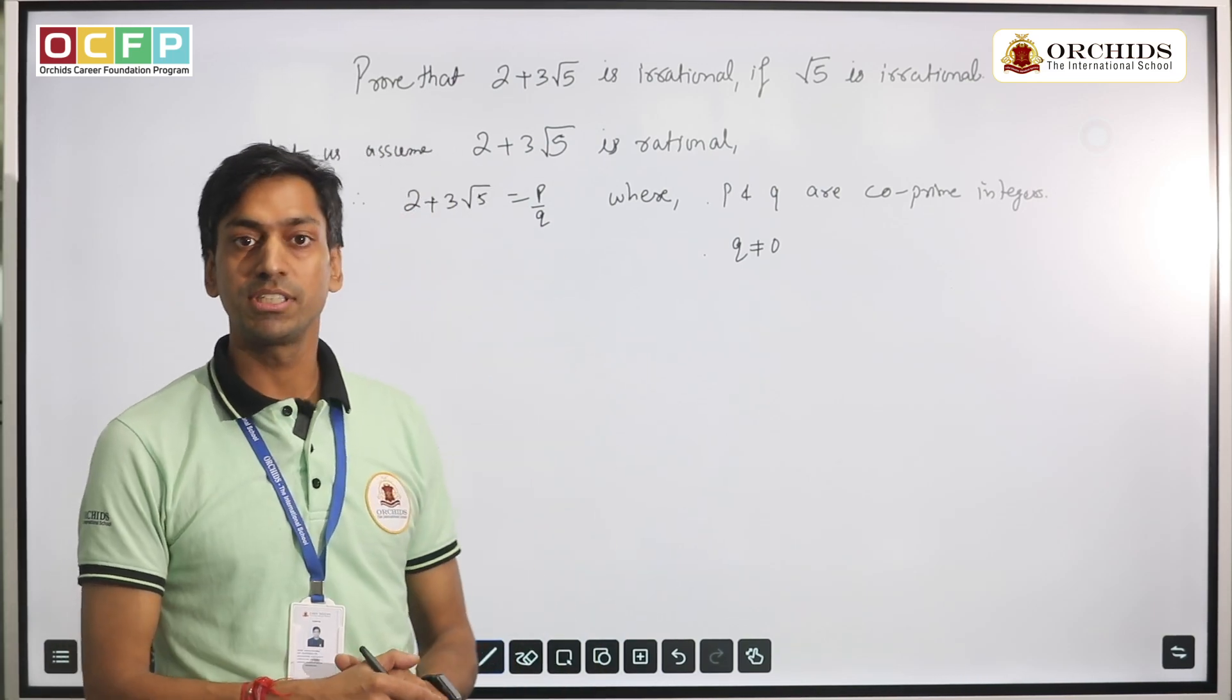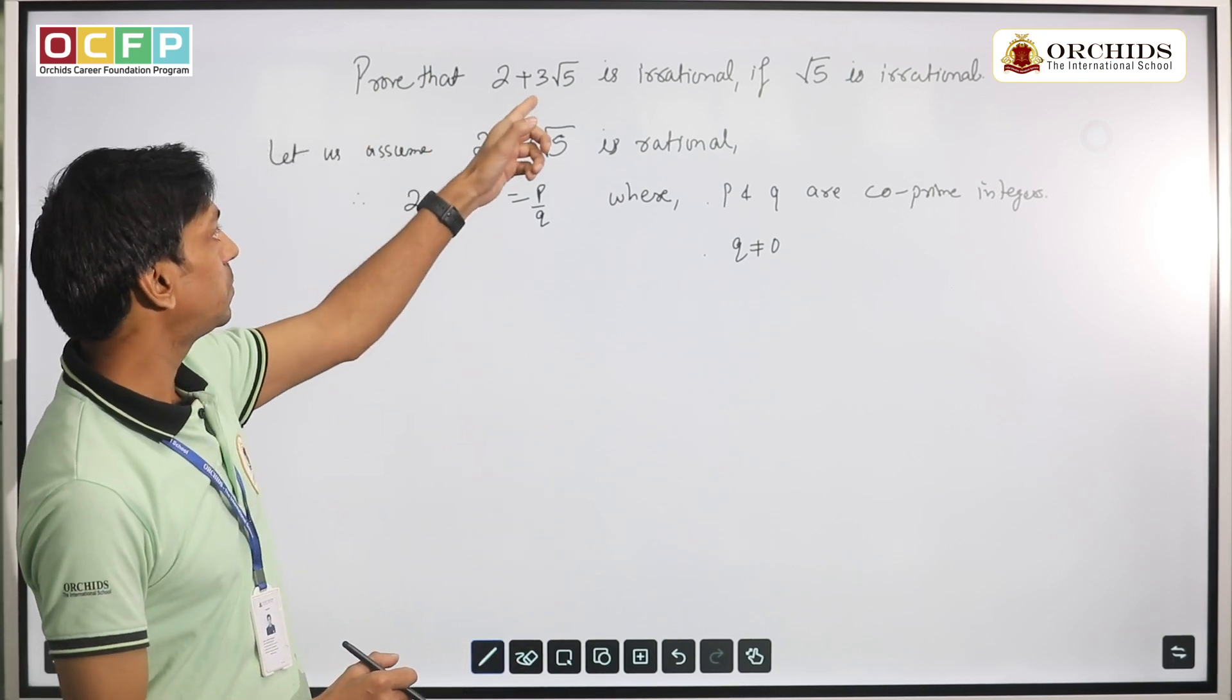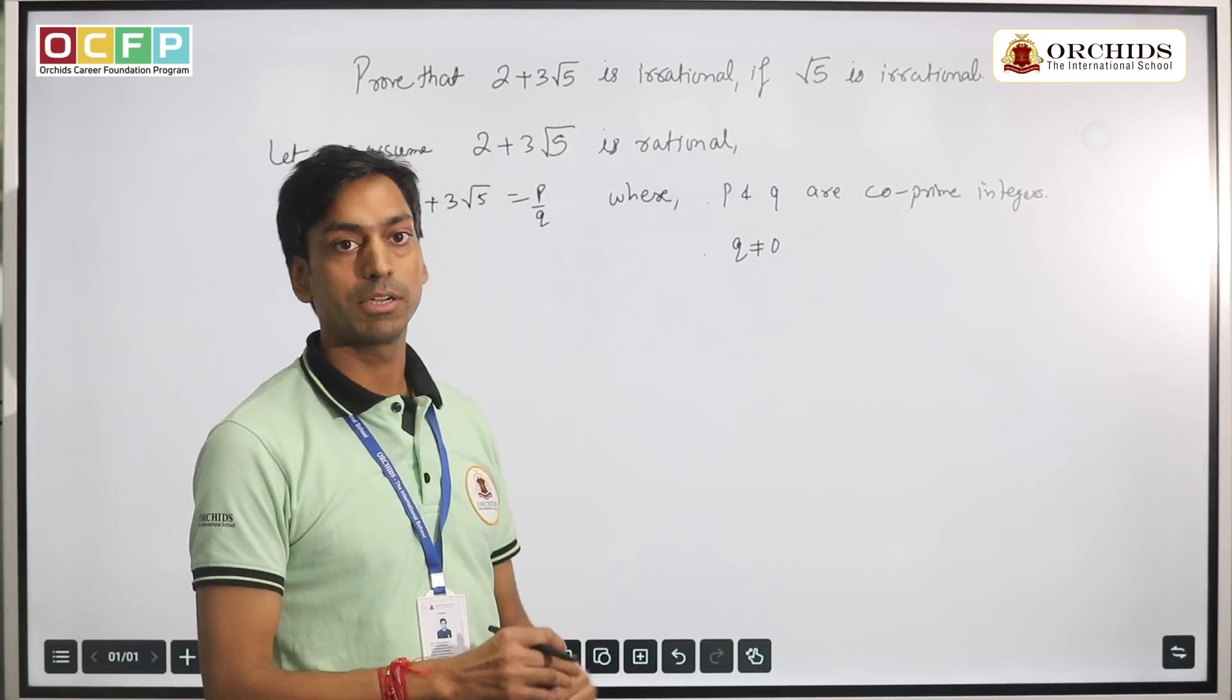The question states: prove that 2 + 3√5 is irrational, where it is given in the question that √5 is irrational.